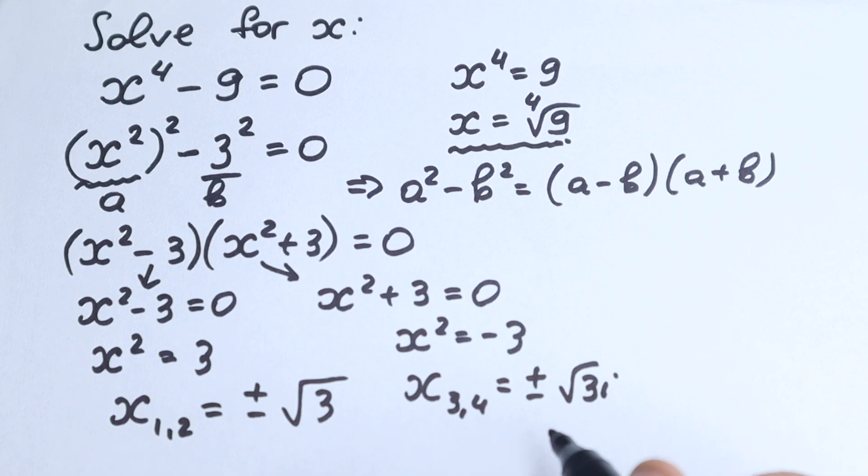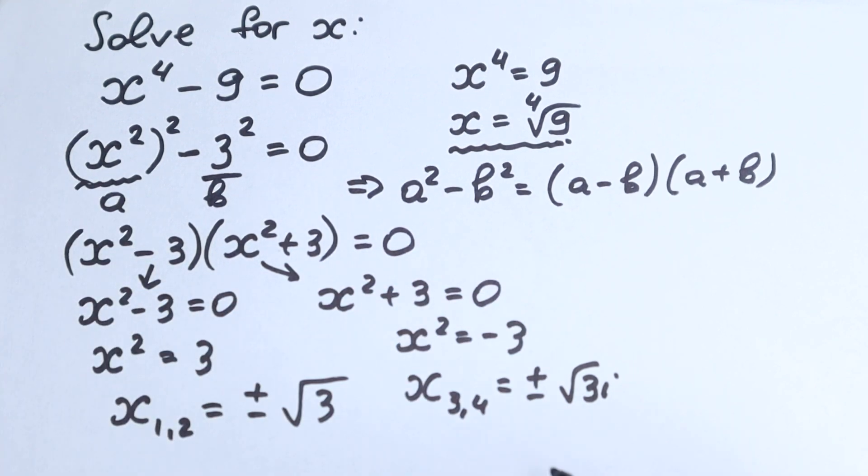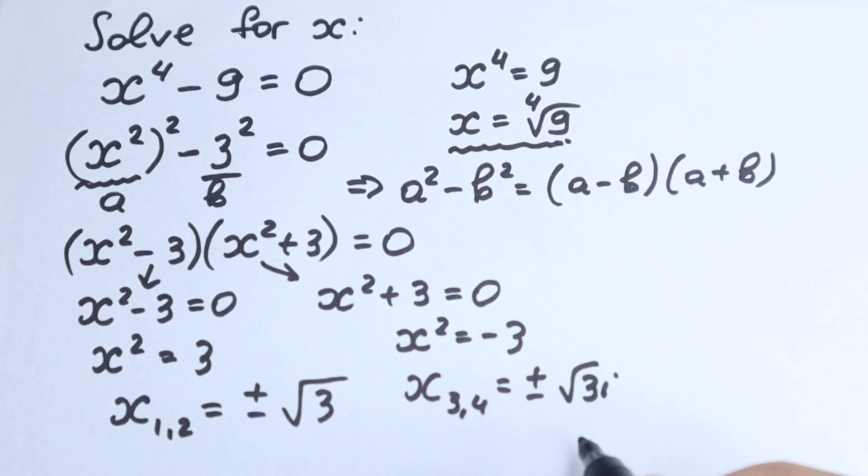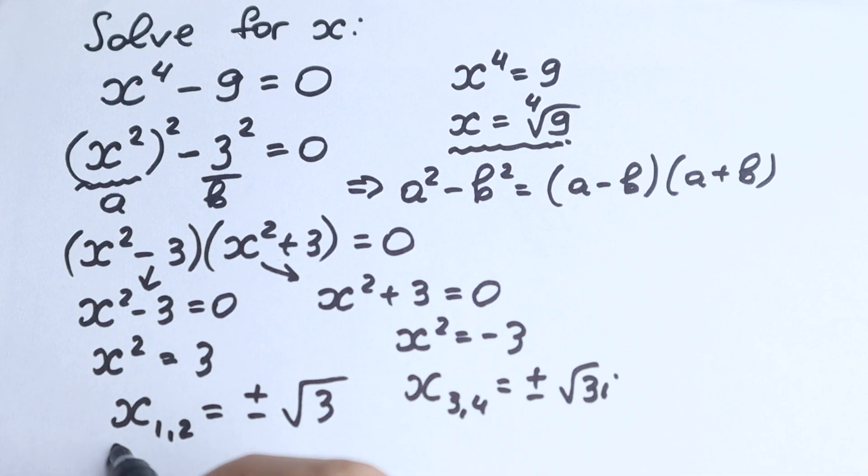And we have four roots: first one and the second pair of roots. So first one plus minus square root of three, first and second, and the third and fourth plus minus square root of three i, which is really good. So this is four roots, this one and this one.